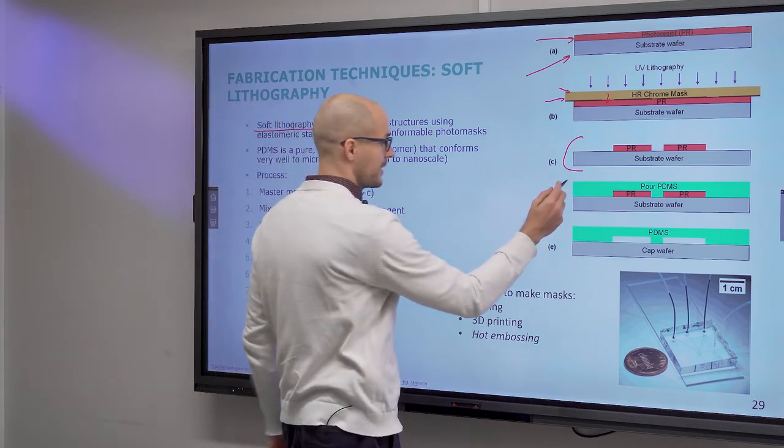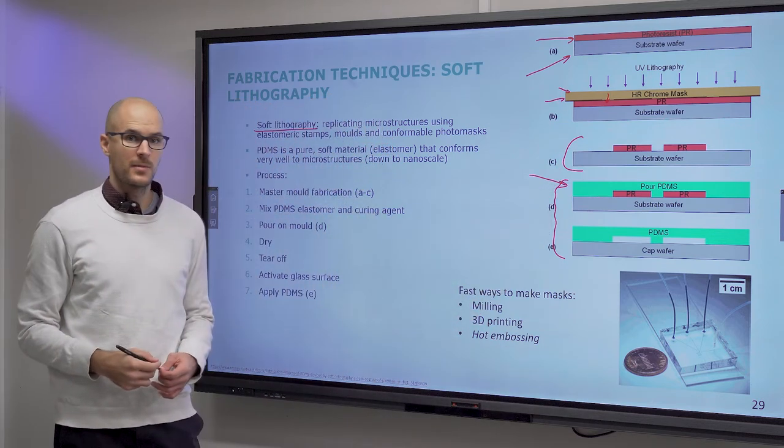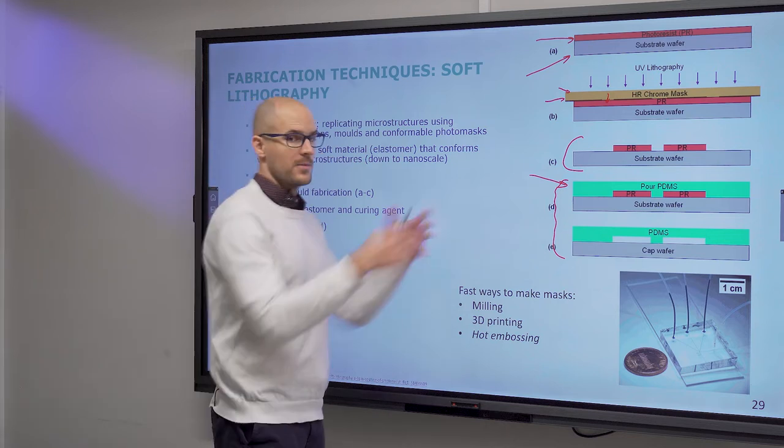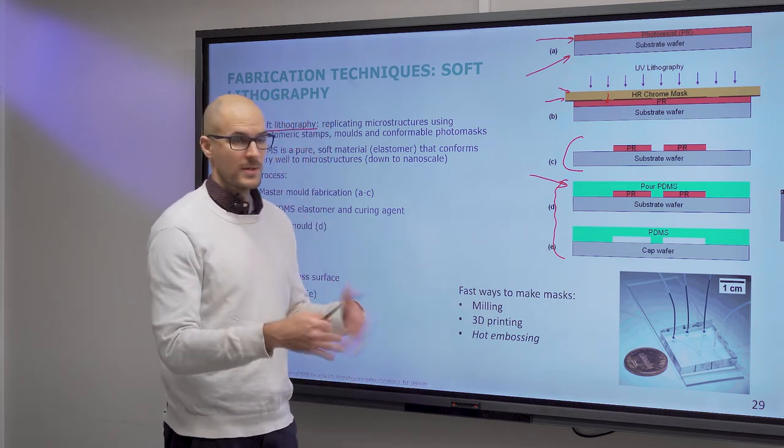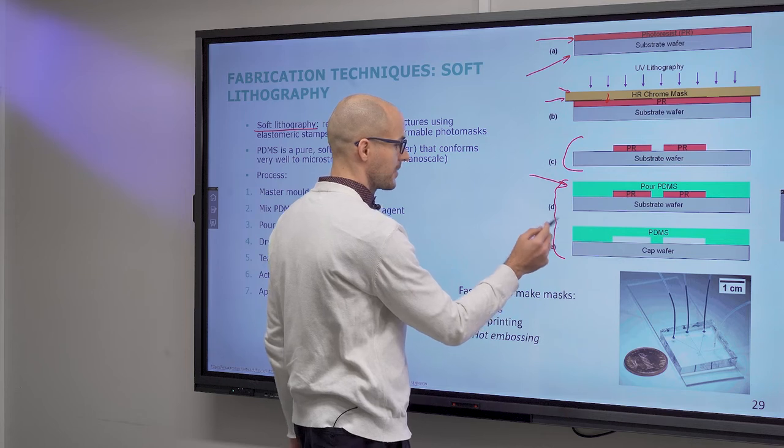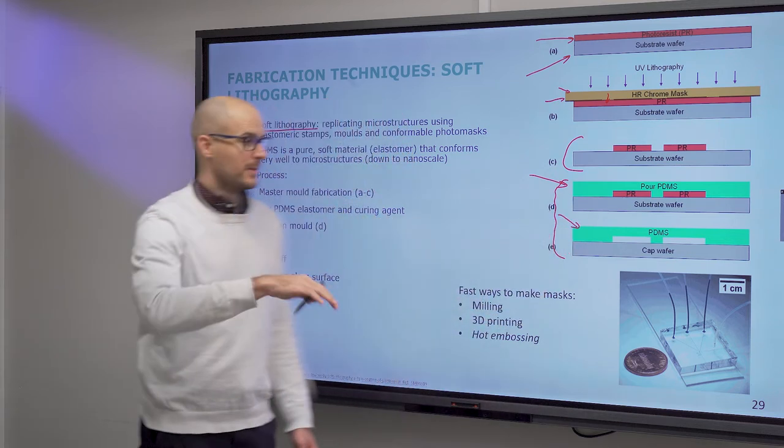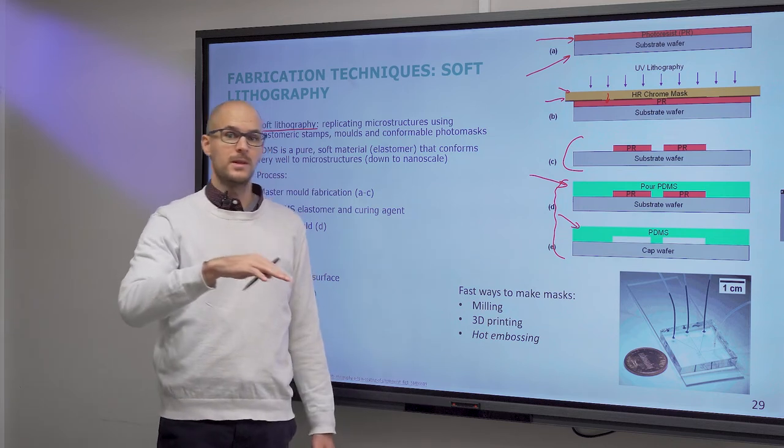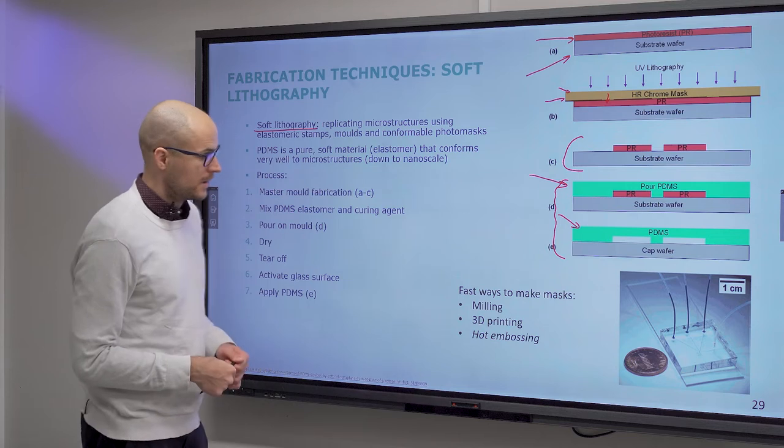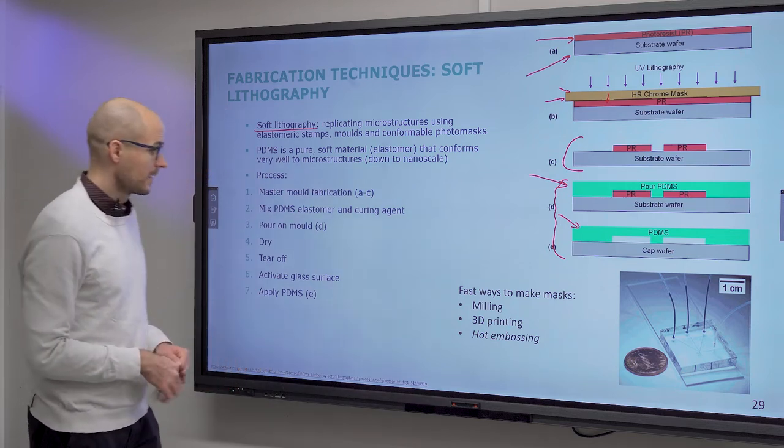And then, this is where the soft lithography actually begins. You pour on the PDMS elastomer, remember, mixed with the curing agent. Then, you vacuum it out, typically apply heat to it to speed up the curing process, and then it cures. And then, you remove it, and then you stick it to your sealing layer, which is either another silicon wafer or glass. And there you go, you have your chip, which looks like this.